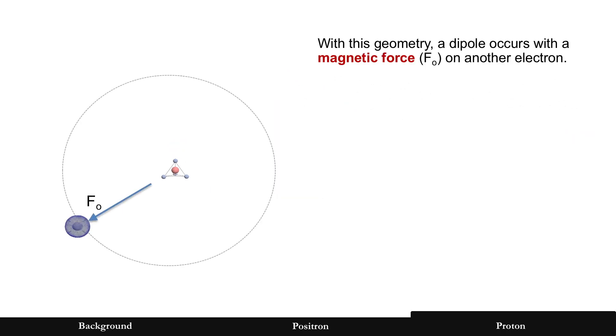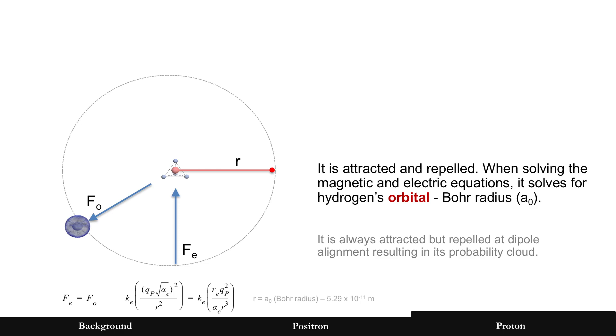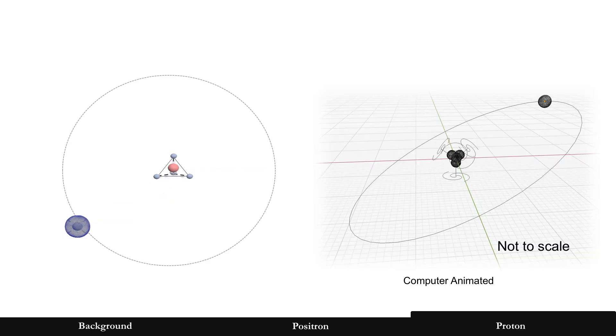And those vortices there are meant to show that dipole alignment. So if you look at the center here, positron and electron, you have the same dipole magnet that we were discussing earlier. So let's consider that a force now, forcing an electron out. But of course, a positron and electron, also as shown earlier, is attractive too. So imagine competing forces, one pushing it out, the other pulling it in. So it's both attracted and repelled. And if you solve for those equations, the magnetic and electric equations, you use the sum of forces rule, and it solves for what is known as hydrogen's orbital. It's called the Bohr radius. Now, the electron would actually be pushed and pulled because the alignment, the repelling force is only at the dipole alignment. It's always attracted, but pushed out only at those alignments as a proton is spinning. And so it results in a probability cloud.